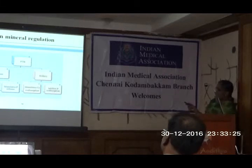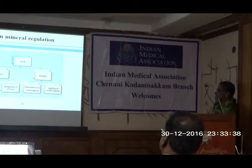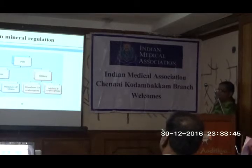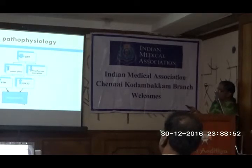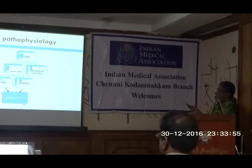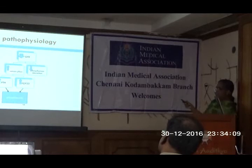PTH is stimulated by low calcium and high phosphorus levels. It works on bone to stimulate calcium and phosphorus release, and on the kidney it stimulates calcium reabsorption and inhibits phosphorus reabsorption. In renal osteodystrophy, reduced GFR causes decreased phosphorus excretion and elevated serum phosphorus, which increases PTH levels and levels of FGF23. Both these hormones try to keep phosphorus in check by promoting phosphaturia by the kidney.